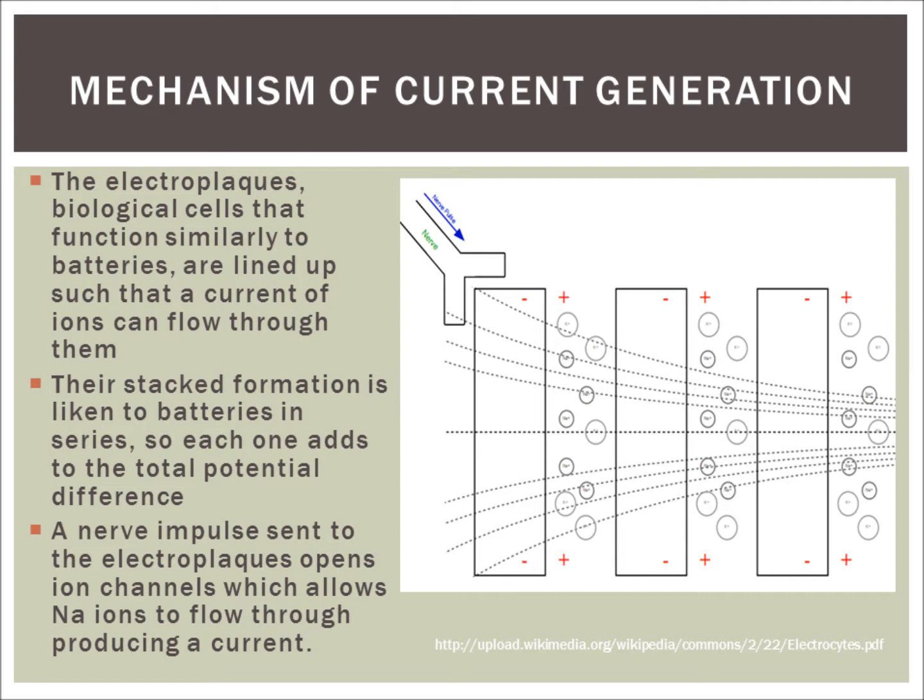Alright, let's look at the mechanism of current generation in these animals. What you have are electroplaques, biological cells that function similarly to batteries. What you have happen is you have a voltage being produced inside and outside the membrane of these cells. And charge cannot flow through freely because there are ion channels that are closed to begin with. So this voltage is produced by stacking these cells together as if you were to have batteries in series, which in turn creates a total voltage.